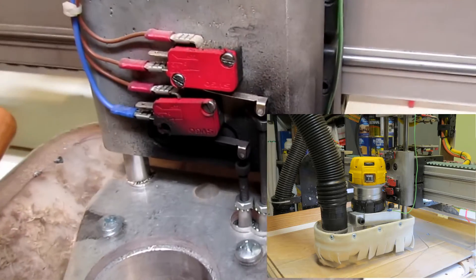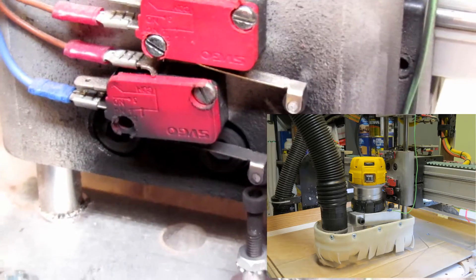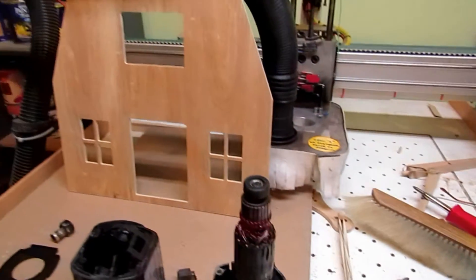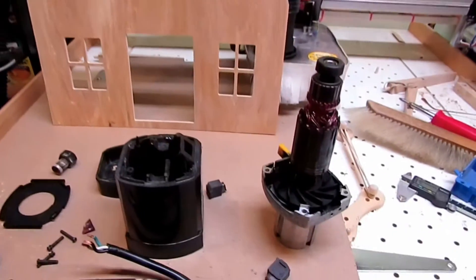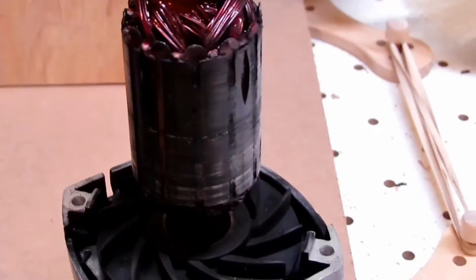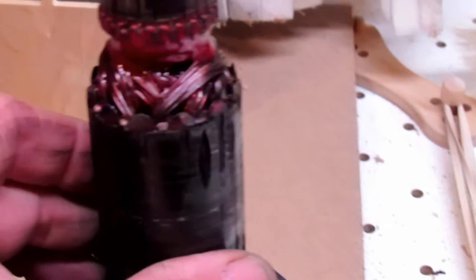Well, the Harbor Freight router that I removed from my router table and tried using on my CNC router has finally self-destructed. The last time I went to use it, all of a sudden smoke, flames, and sparks started coming out of it with a lot of black powder.